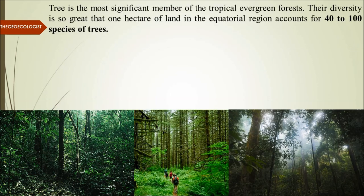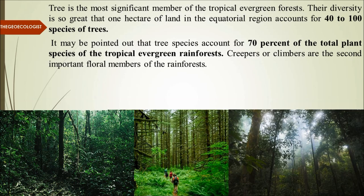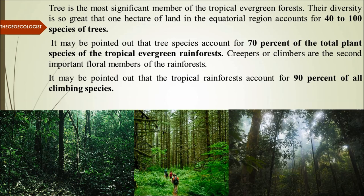Trees are the most significant members of the tropical evergreen forest. Their diversity is so great that one hectare in the equatorial region accounts for 40 to 100 species of trees. Tree species account for 70 percent of the total plant species of the tropical evergreen rainforest. Creepers or climbers are the second important floral members — they climb over the trees, and tropical rainforests account for 90 percent of all climbing species.